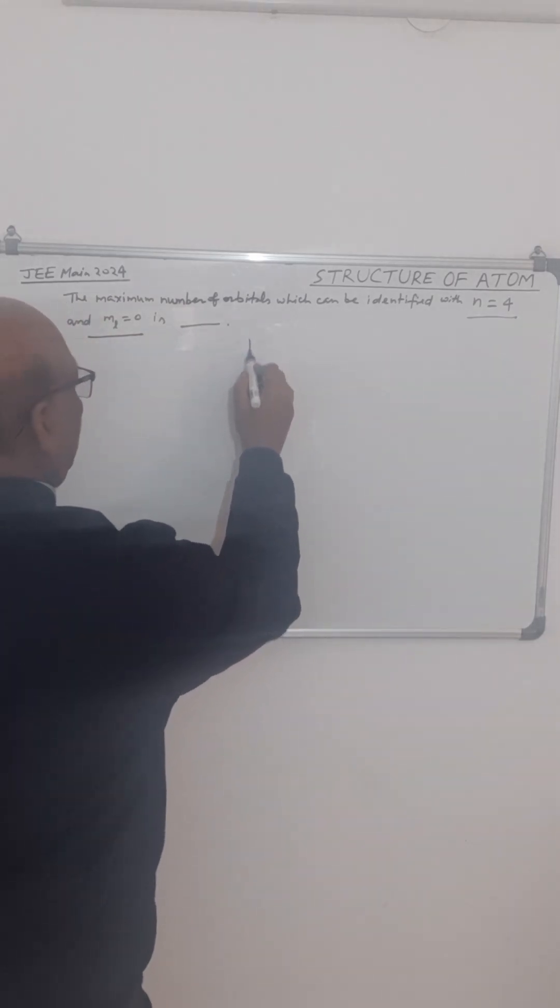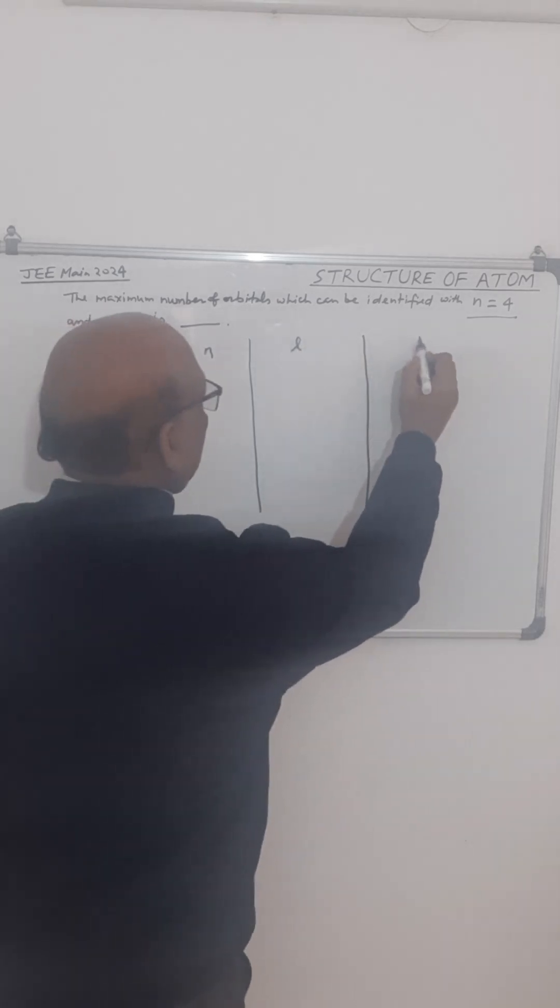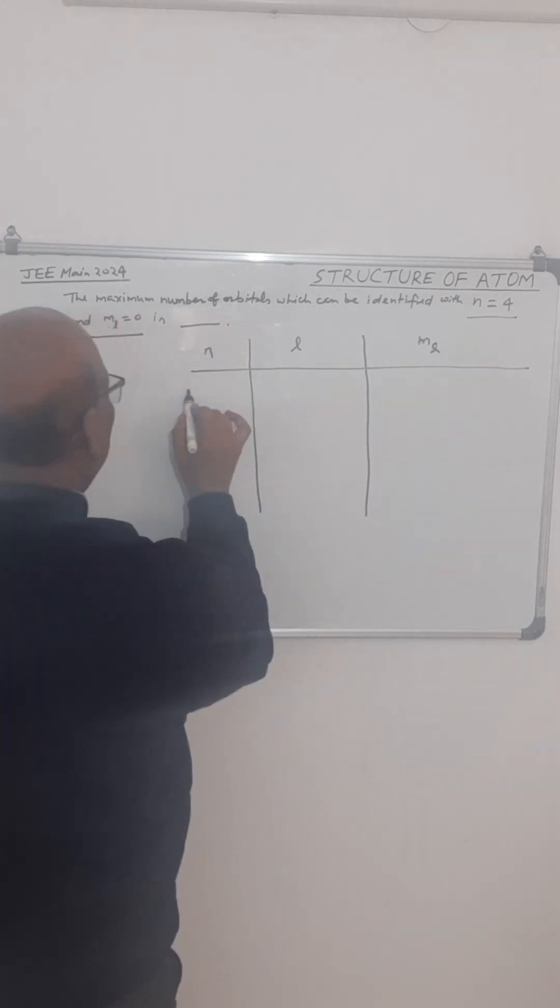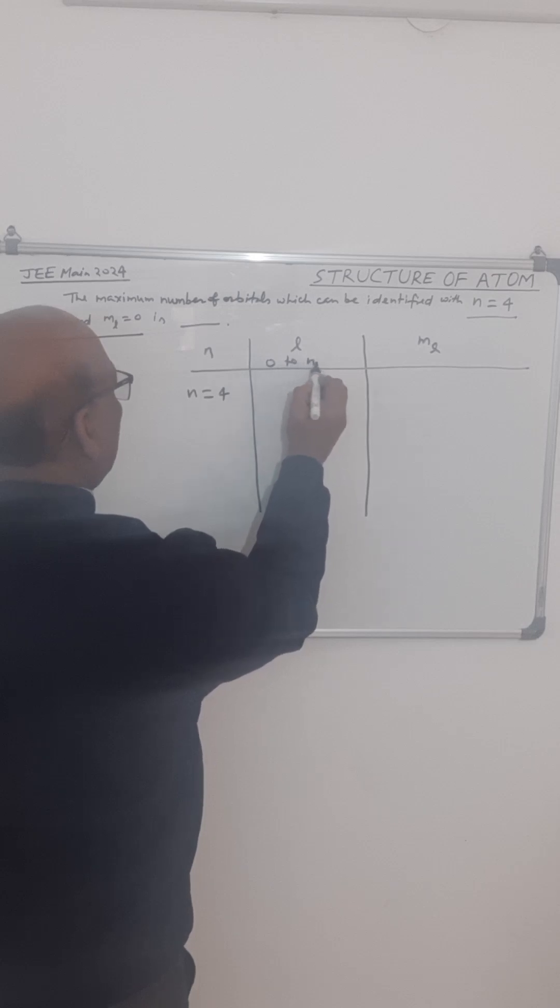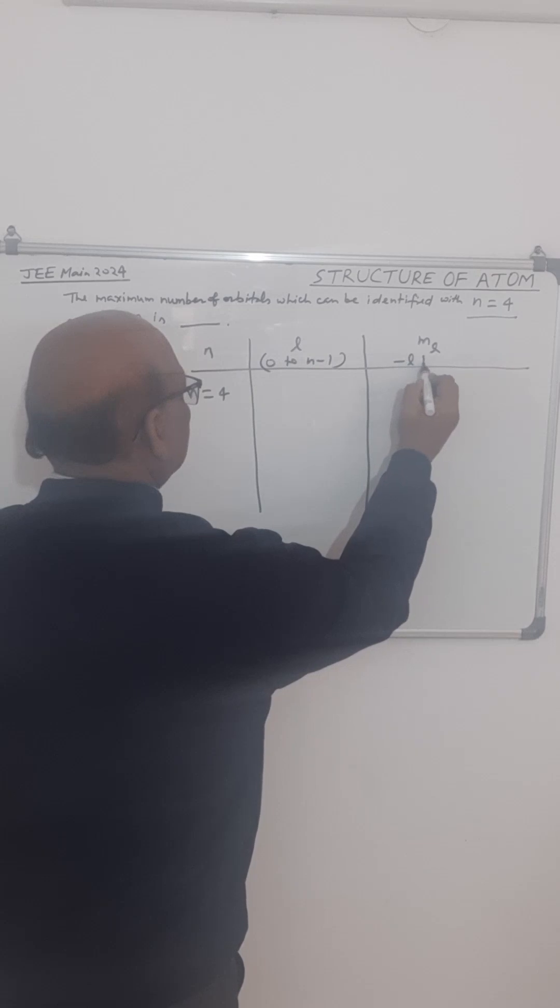We will tabulate the various possible values of azimuthal quantum number, that is L, and magnetic quantum number, that is ml, for n equal to 4. L can have the value 0 to n minus 1, and ml can have the value minus L to plus L.